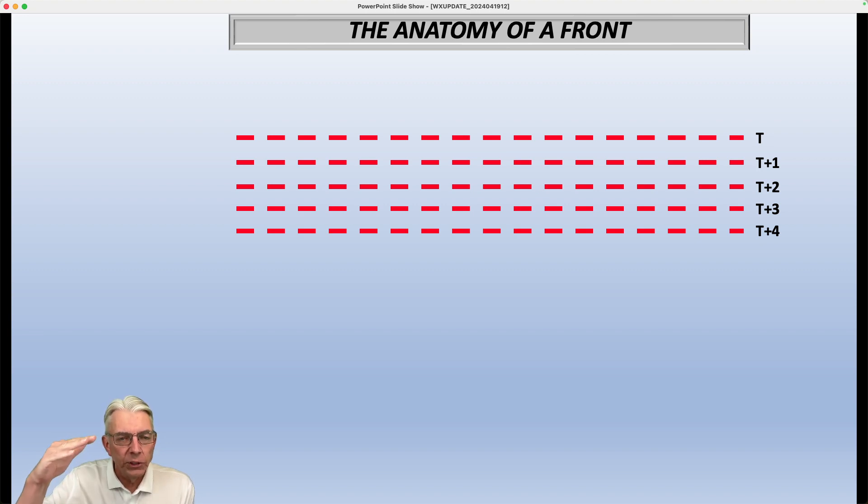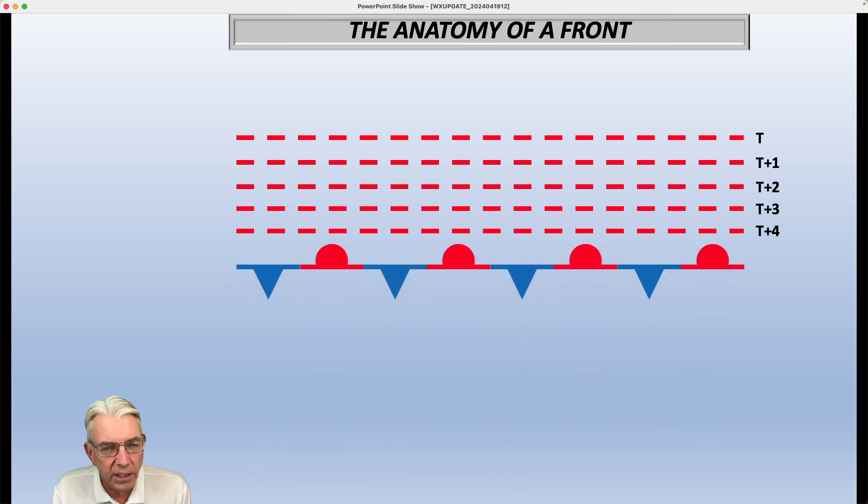Okay, all of the temperature gradients, if you will, where you have temperatures going from warm to cold or cold to warm are always on the cold side of the boundary. So if we put a stationary front in here, denoted by these alternating blue triangles and red semi-circles, then this would be the warmest, this would be uniformly warm down in here. And then we would start to gradually get into the cold air here.